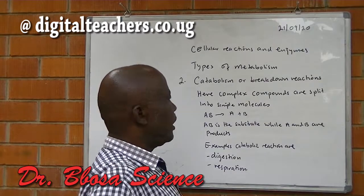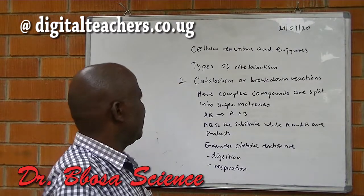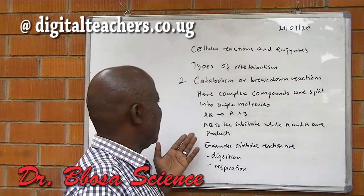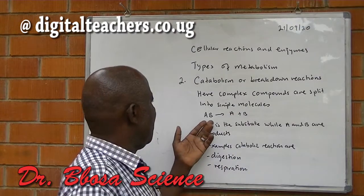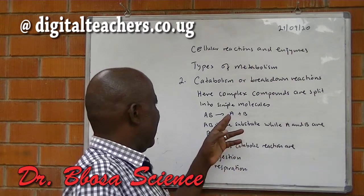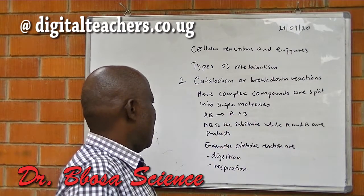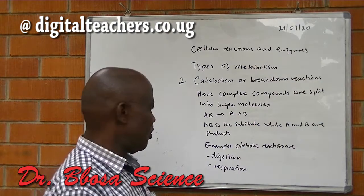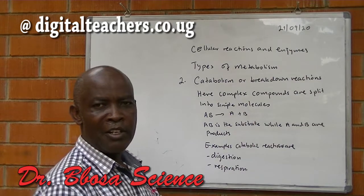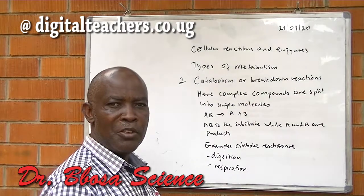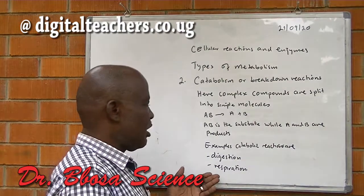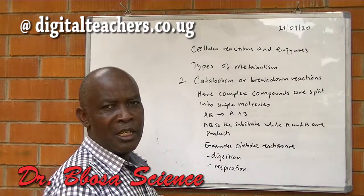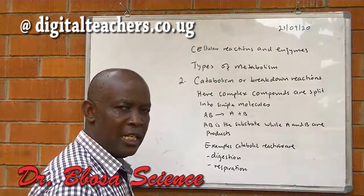Two, catabolic or breakdown reactions. Here, complex compounds are split into simple molecules. For example, AB, which is a substrate, is broken into A and B, which are products. Examples of catabolic reactions include digestion, where food is broken down into soluble, smaller molecules to be absorbed by the body, and respiration, where glucose is broken down into smaller molecules — carbon dioxide and water — to obtain energy.